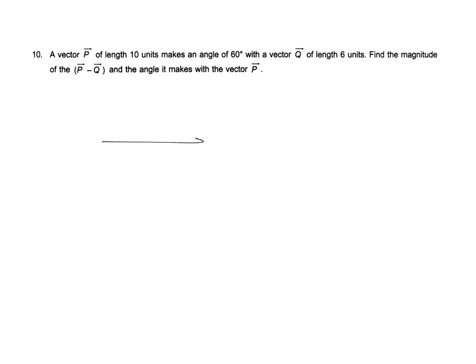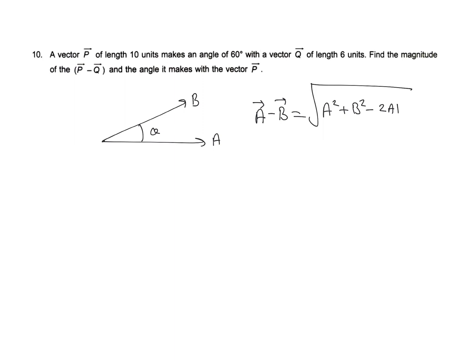We know that if we have a vector a and another vector b, with angle theta between them, and we want to find the magnitude of a minus b vector, we use the equation: under root of a squared plus b squared minus 2ab cos theta.